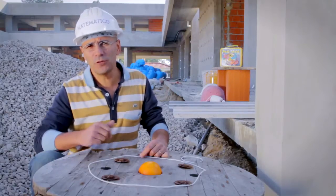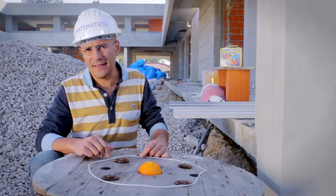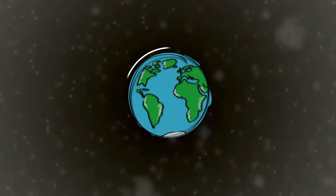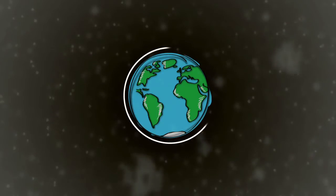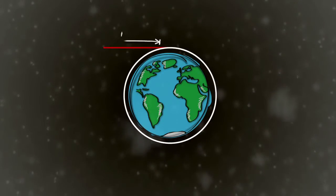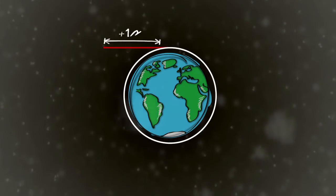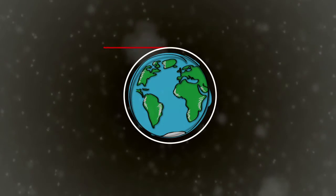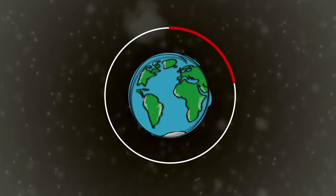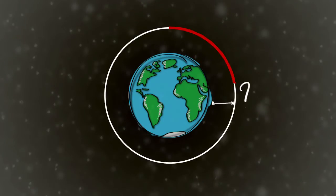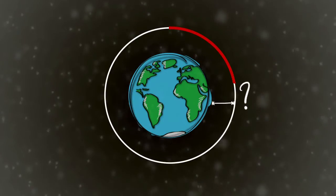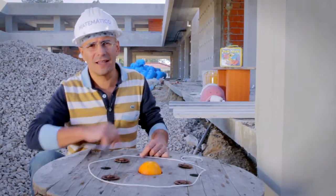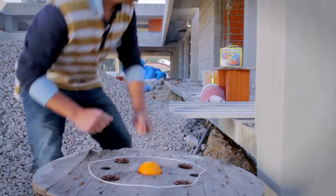Now let's do the same with our planet. Imagine that Mr. Leonardo has enough string to circle the Earth. If we add a meter to this string and shape a circle around the Earth, what would be the gap between the string and our planet? Keep that in mind while I look for some pie inside that lunchbox.